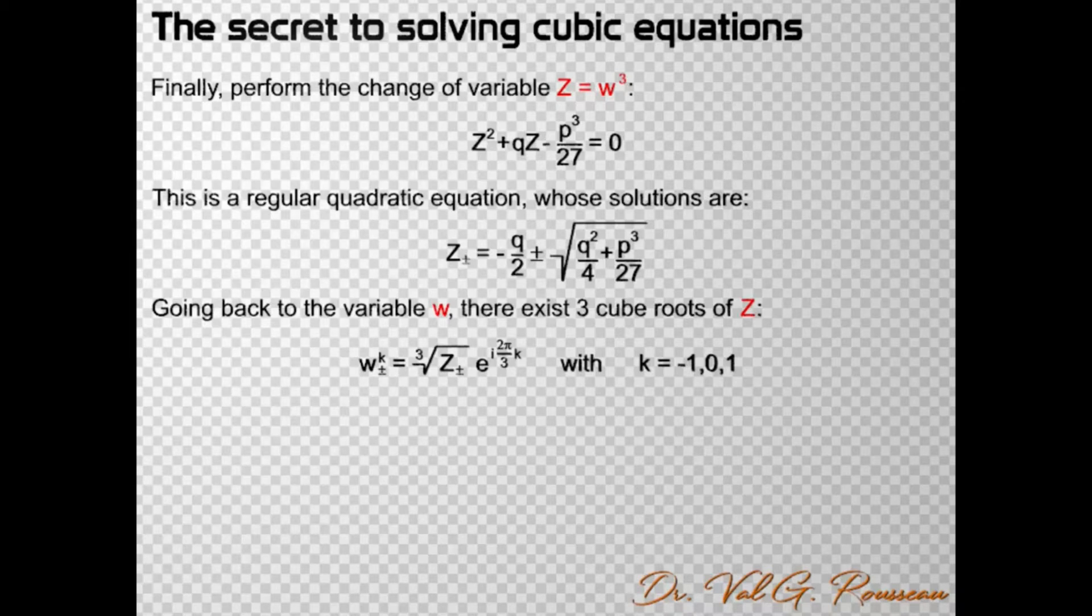That's why I added the lower index ± and the upper index k to w. So, three of these solutions must be duplicates of the others, but which ones? Well, for the time being, let us keep the six solutions and go back to the variable y.